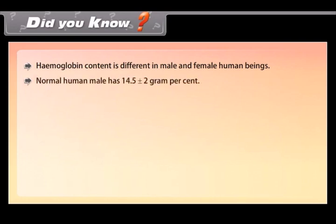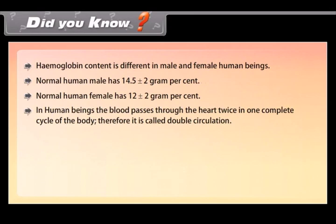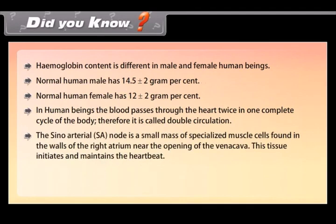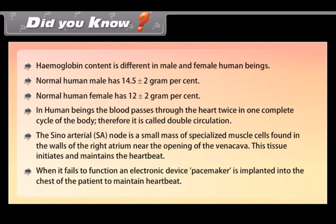Did you know. Hemoglobin content is different in male and female human beings. Normal human male has 14.5 plus minus 2 gram per cent. Normal human female has 12 plus minus 2 gram per cent. In human beings the blood passes through the heart twice in one complete cycle of the body, therefore it is called double circulation. The sino-arterial SA node is a small mass of specialized muscle cells found in the walls of the right atrium near the opening of the vena cava. This tissue initiates and maintains the heartbeat. When it fails to function an electronic device pacemaker is implanted into the chest of the patient to maintain heartbeat.